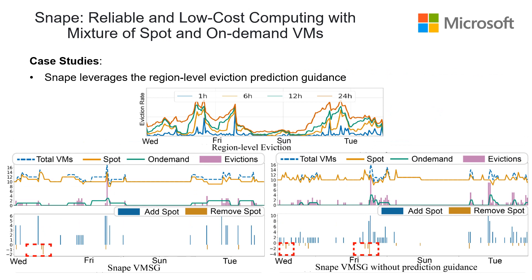The second observation is that SNAP leverages region-level eviction prediction guidance. In the left figure, on-demand VMs are used during periods of high eviction, and they are removed when future eviction is estimated to be low. The estimated eviction is consistent with ground-truth eviction rates. In contrast, as illustrated in the right figure, SNAP without prediction guidance acts in a myopic manner by not keeping on-demand VMs for high-eviction periods, instead over-provisioning Spot VMs, which results in SLO violations.